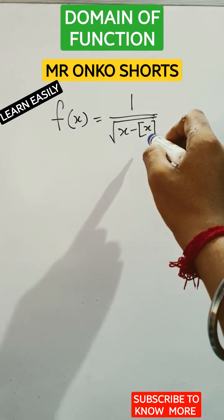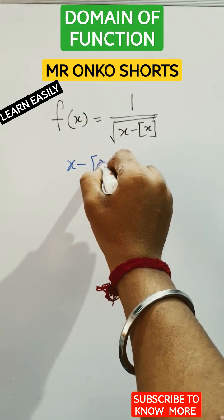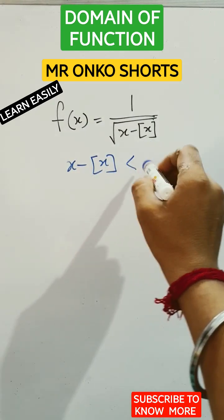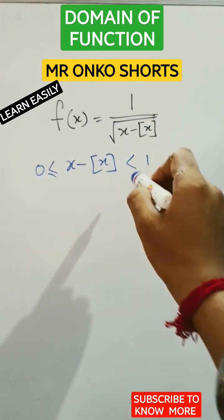We know that box of x means the greatest integer function. So first of all, x minus box of x is equals to the fractional part of the given value that must be greater than equals to 0 and less than 1 since it's a fractional part.